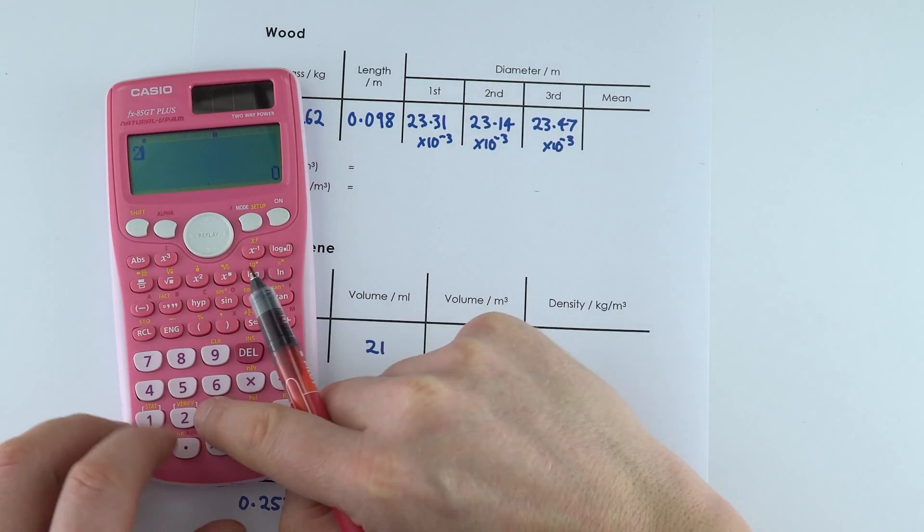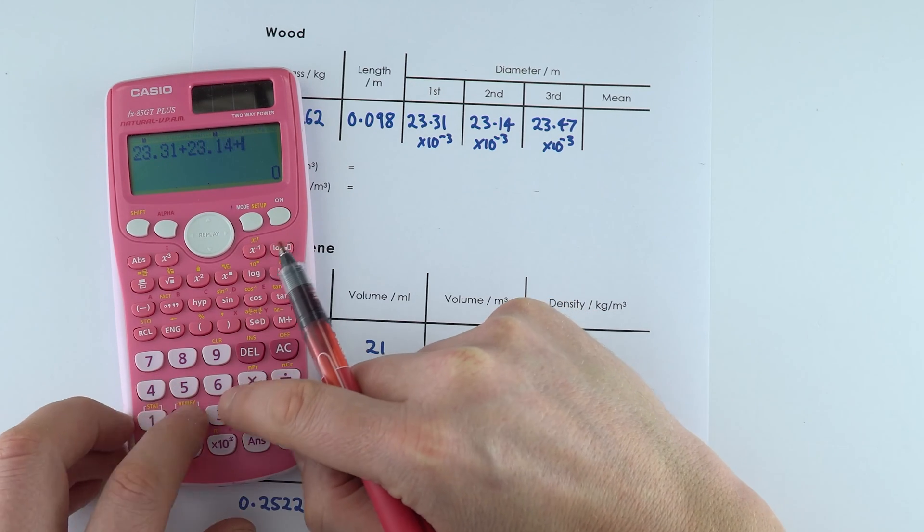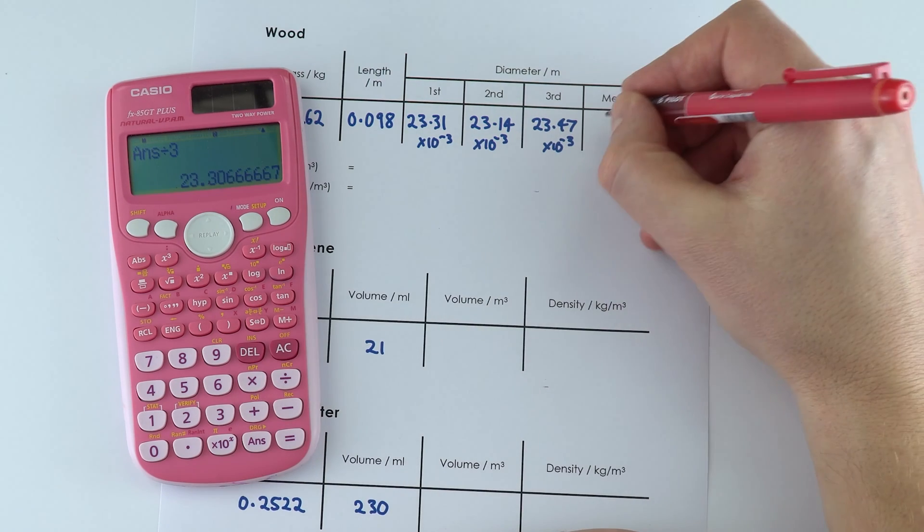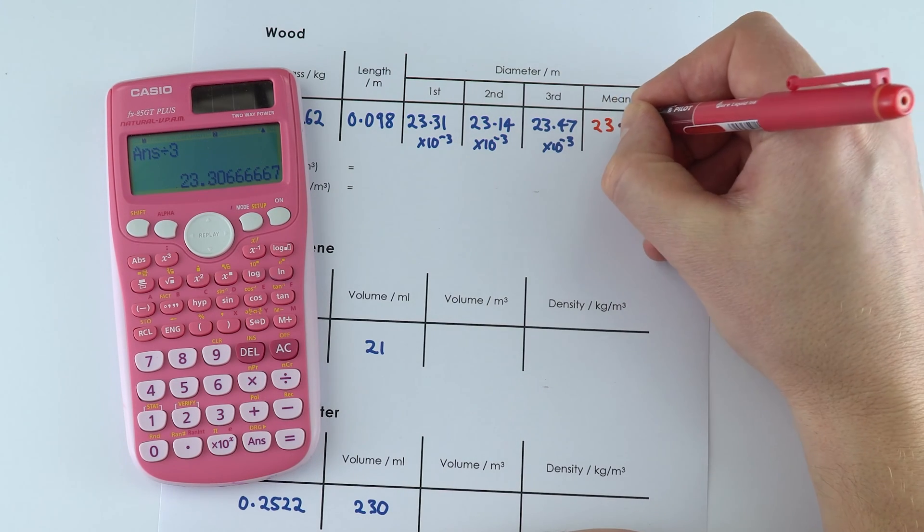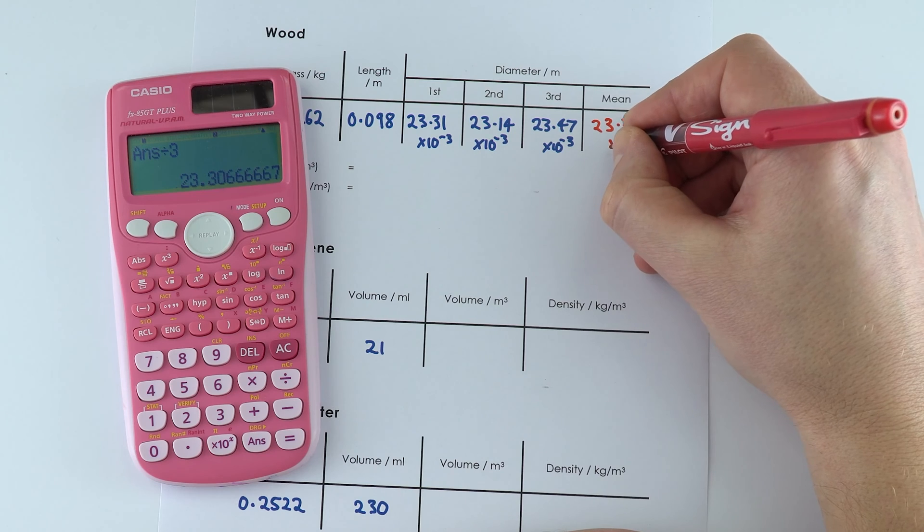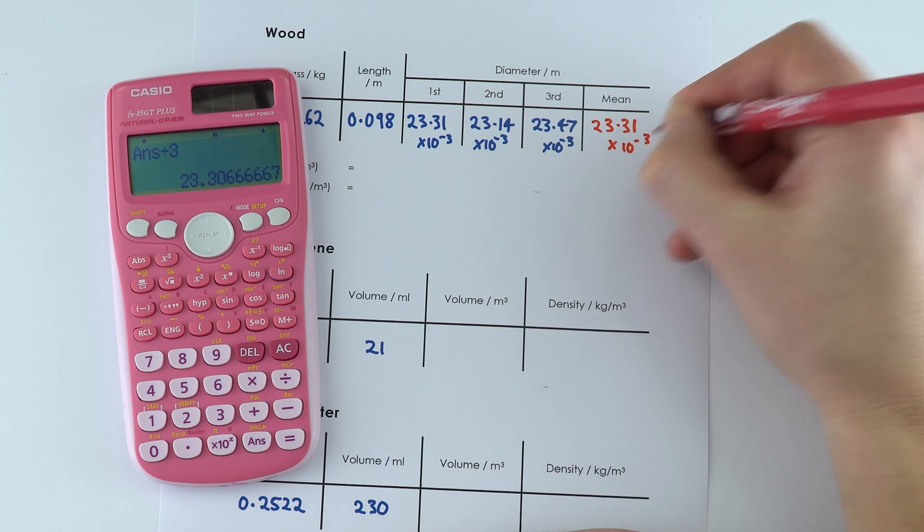So to work out the average, it's going to be 23.31 plus 23.14 plus 23.47 divided by 3 to give an average value of 23.31 millimeters, which is therefore 23.31 times 10 to the minus 3 meters.